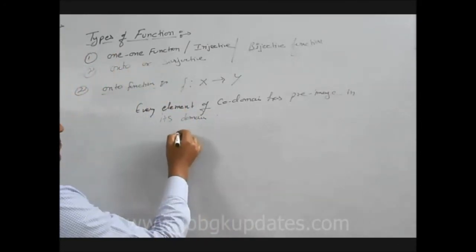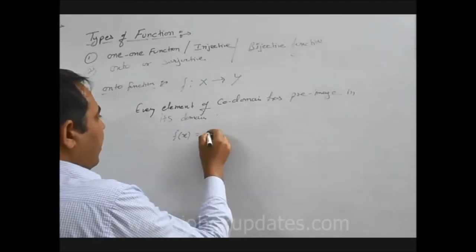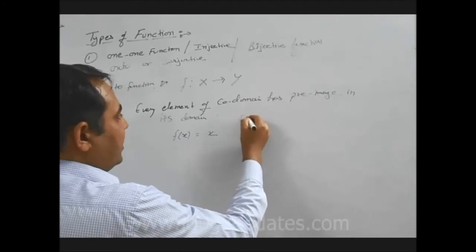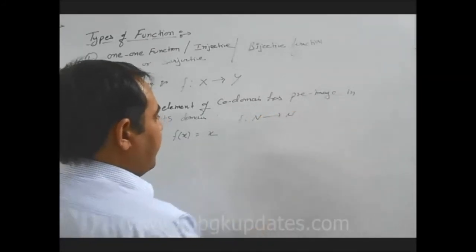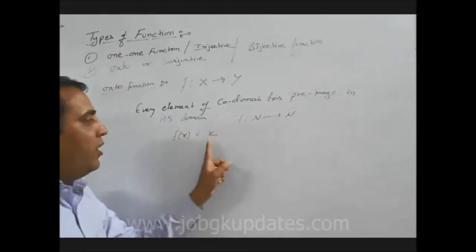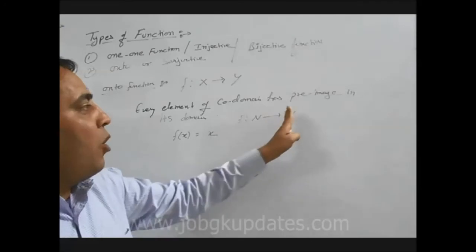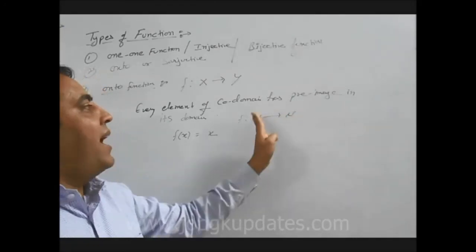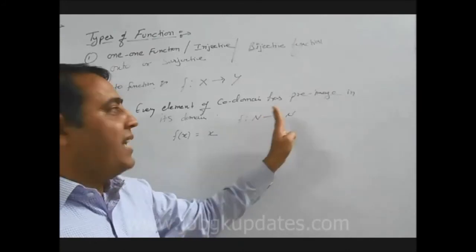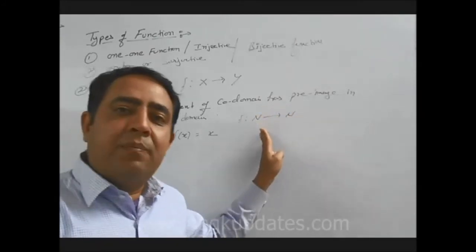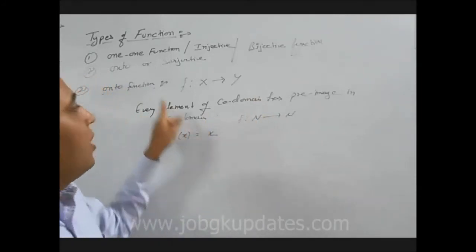Let us take an example: f(x) = x, and the function is defined from natural numbers to natural numbers. Whenever we put any value — if we put 1, we get 1; if we put 2, we get 2. All elements of co-domain are related to elements of domain, meaning every element of co-domain has a pre-image in its domain. Therefore, this function is an onto function.